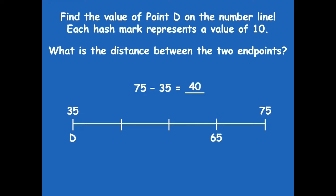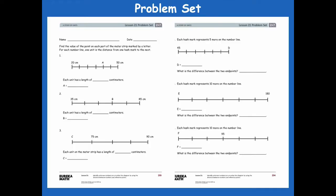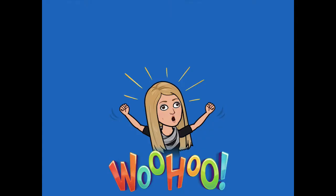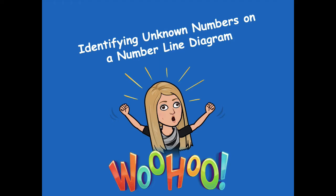Great job with those, friends — some of those were tricky, so great job working through them with me. Here's a copy of your problem set; if you need it, you can pause and solve all of them here. Woohoo — you did an awesome job identifying unknown numbers on a number line diagram! Please head back to the module to see what you need to complete for your independent practice. If you have any questions, please let me know — I'd be happy to help. Hope you have a great rest of your day! Bye, friends!